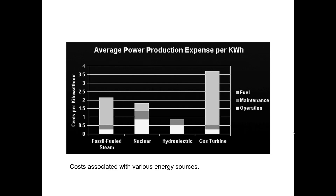This graph shows the average power production expense per kilowatt hour. On the y-axis you have cents per kilowatt hour, and on the x-axis you have different types of energy production — hydro compared to nuclear, fossil-fueled steam, and gas turbines. Each bar indicating the total cost is split into three different segments.